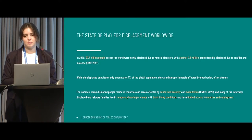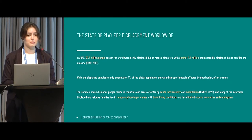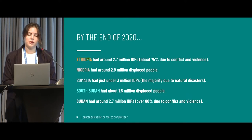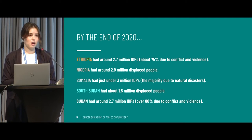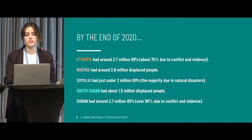Sub-Saharan Africa is one of the most conflict-affected regions in the world, with one-third of the total number of global conflicts taking place in that region, due to both conflict as well as climate change and various crises associated with that. The five countries we studied were Ethiopia, Nigeria, Somalia, South Sudan, and Sudan — all five are some of the most conflict-affected in the region and record some of the highest numbers of conflict-induced displaced populations.